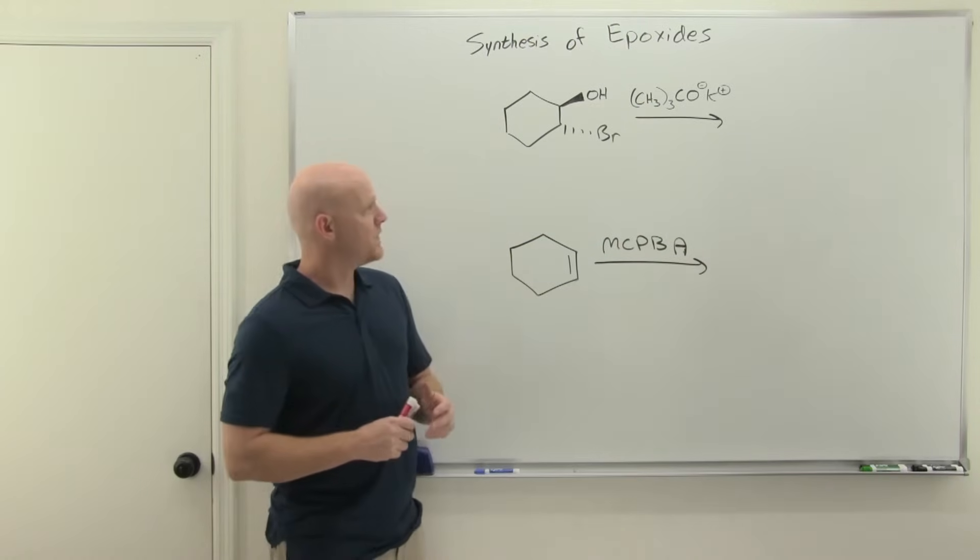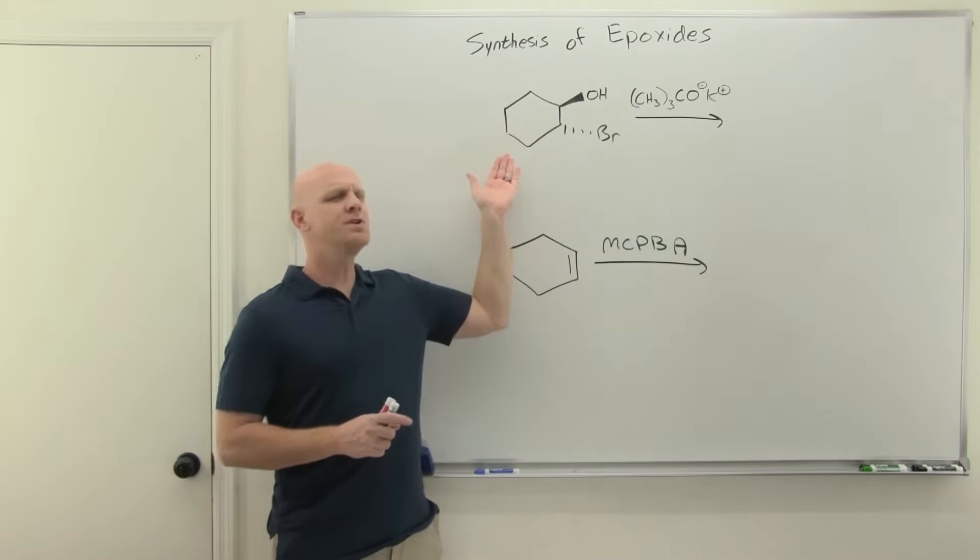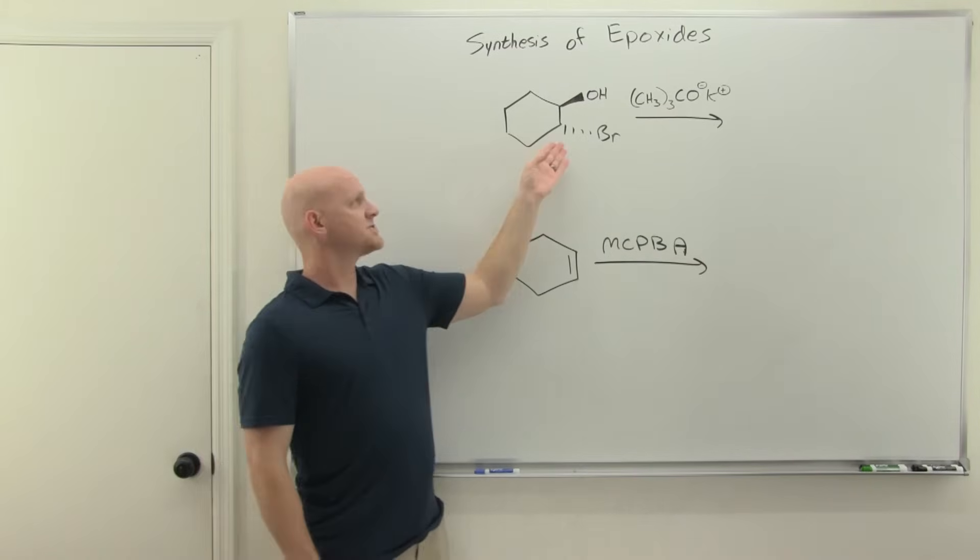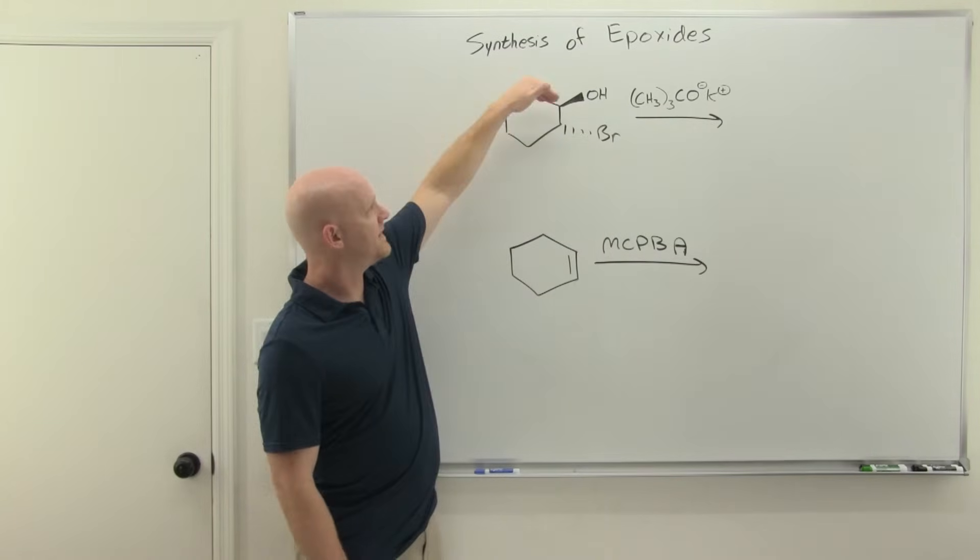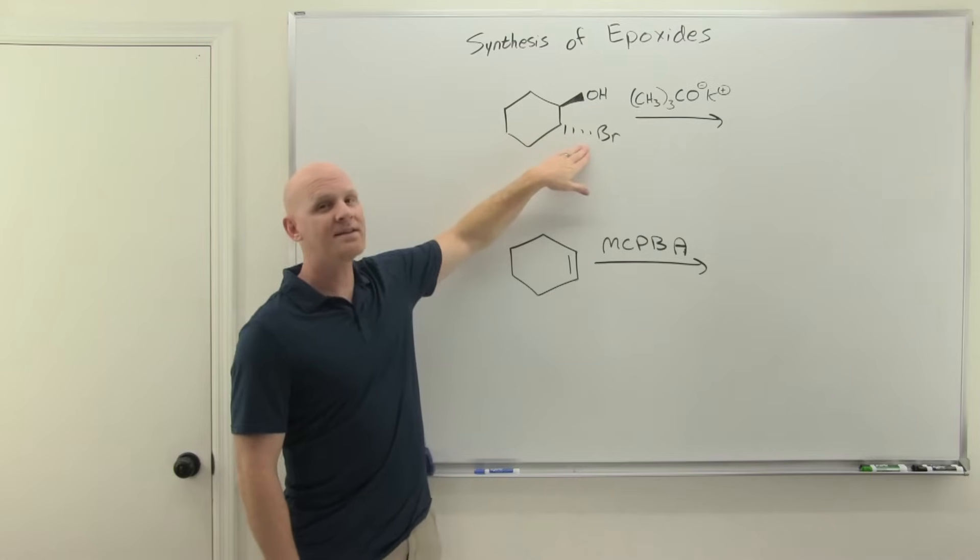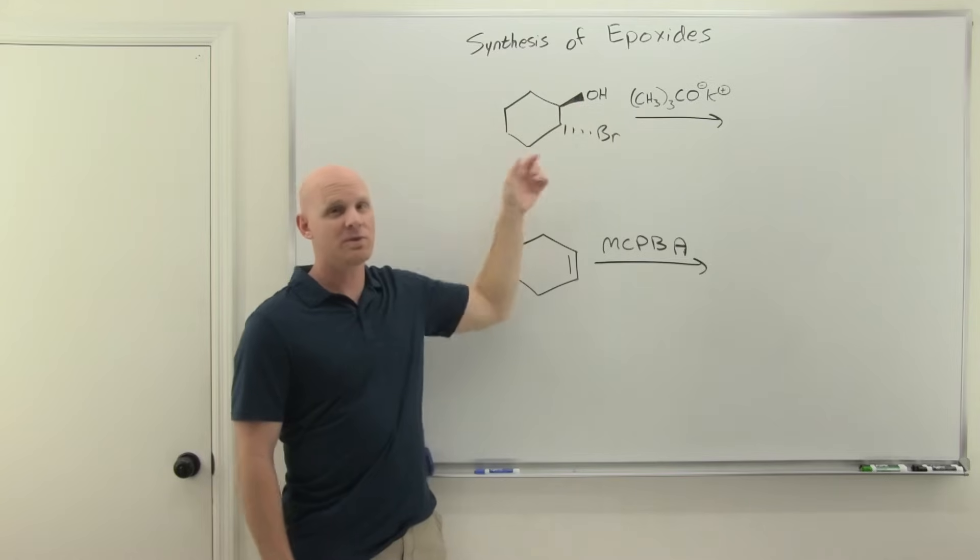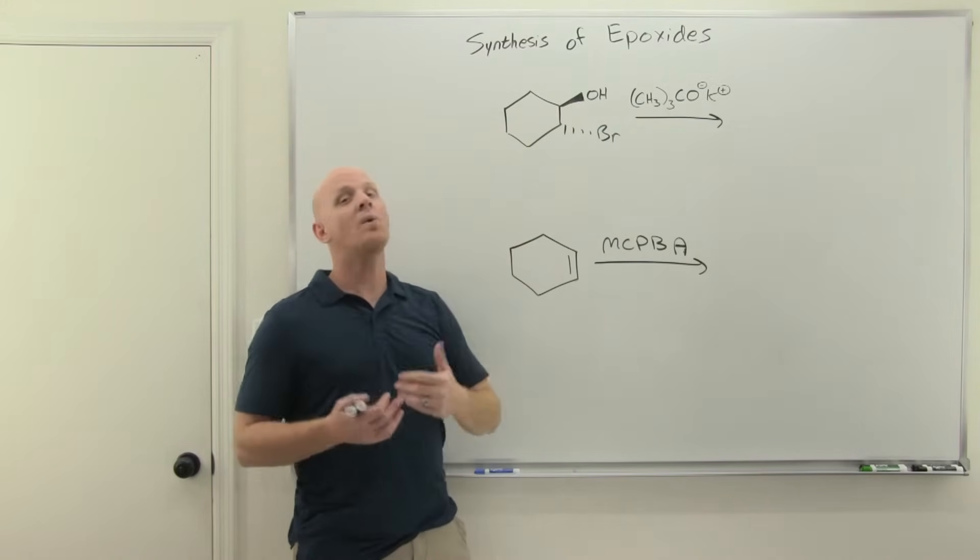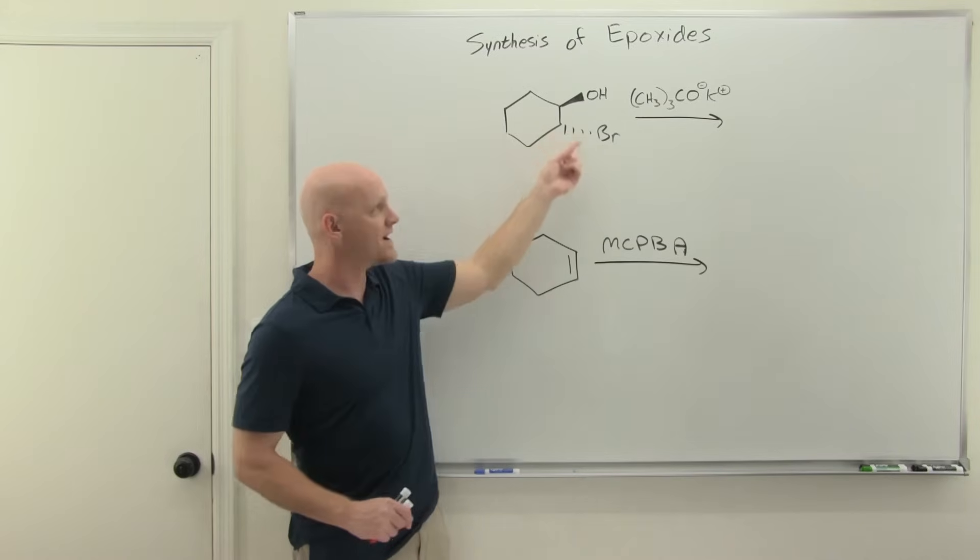Alright, so a couple different ways, and we'll start with this first one here. This is new, but it's really based off some things that are old. In this case, you've got to have an alcohol right next to an alkyl halide, and I show it on the ring here because if it happens on a ring, they need to be trans to each other because it's going to involve backside attack. You can only get to the backside on a ring if you're already on the backside, if you're trans here.